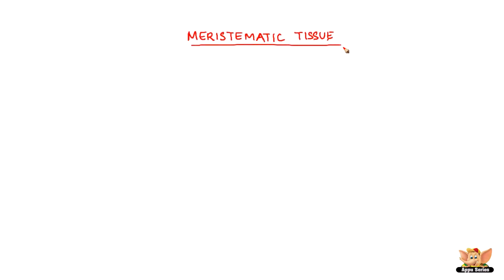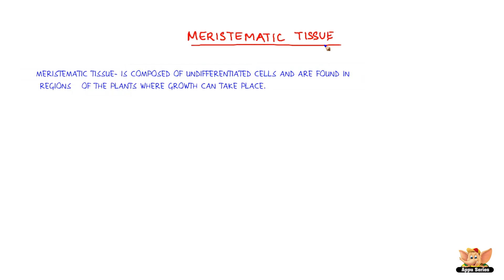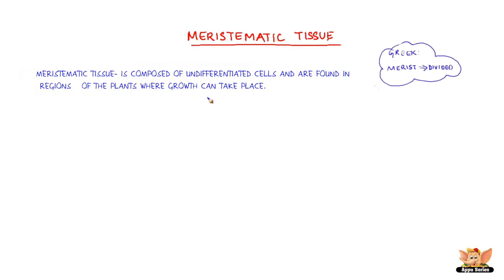Meristematic tissue is composed of undifferentiated cells and are found in regions of the plant where growth can take place. In Greek, merist means divided.